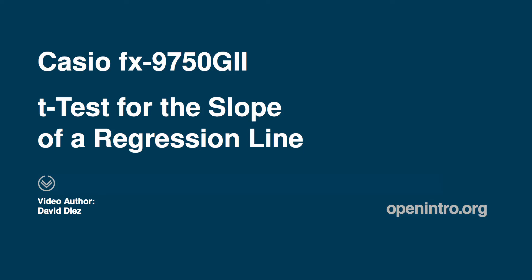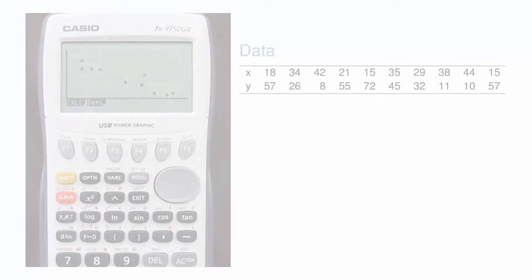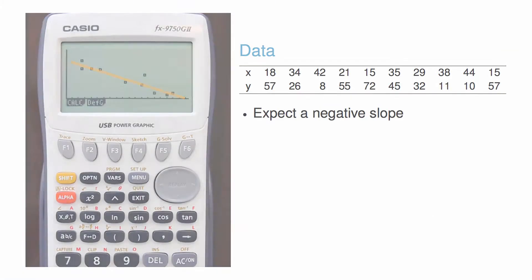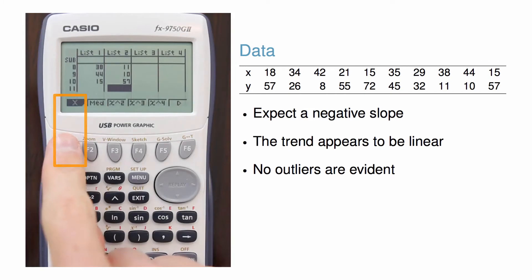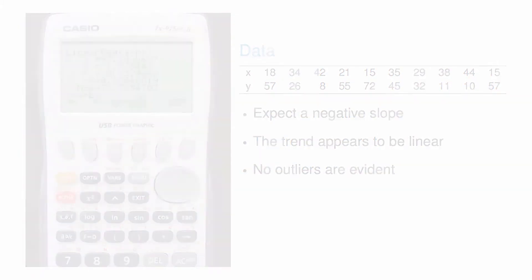I'm going to cover how to perform a t-test for the slope of a regression line summary using a Casio 9750 graphing calculator. I'll be checking whether the data provides strong evidence of a non-zero slope. The sample dataset I'll use is from a previous video where I described how to draw a scatterplot of the data and compute the y-intercept and slope for the regression line using the Casio 9750 graphing calculator.